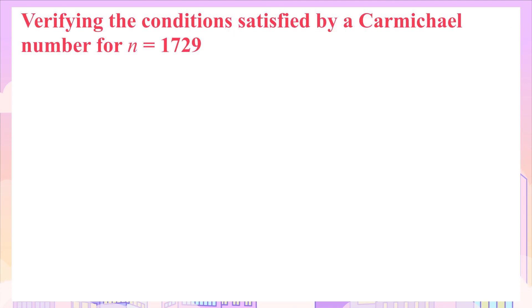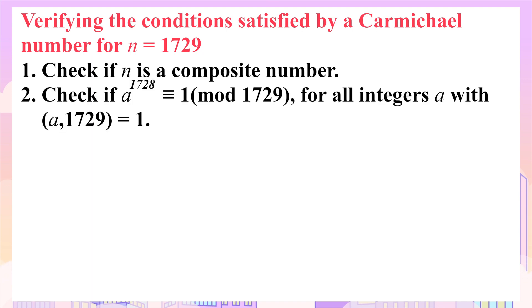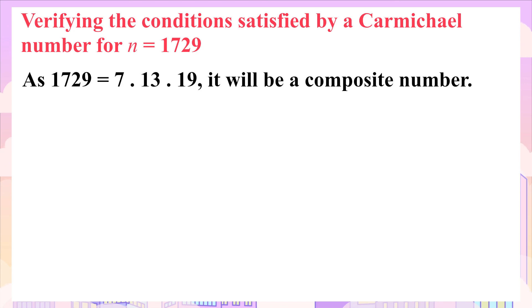Now, in order to check the properties of Carmichael number for n equals 1729, we have to see the following two things. Firstly, we have to see if n is a composite number. The second thing to be checked is that if for all integers a, with the GCD of a and 1729 being 1, a to the power 1728 is congruent to 1 modulo 1729. As 1729 is equal to 7 times 13 times 19, it will be a composite number and it fulfills the first condition.